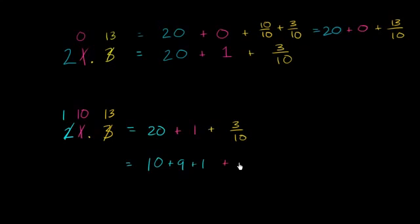And we're going to have, and of course, we have what we have in our ones place, plus 1 plus 3 tenths. And what I want to do is I want to take this 9, the 9 that I took from the tens place, and give it to the ones place. And I'm going to take this 1 that I took from the tens place and give it to the tenths place. So 1 is the same thing as 10 over 10.